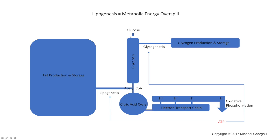In summary, glucose initially enters a cell and produces enough ATP to cover its cellular needs. Above and beyond this, that glucose enters into glycogenesis, storing excess energy as glycogen. Once those glycogen levels are full, the acetyl-CoA generated from glucose breakdown accumulates and is fed into an overspill mechanism called lipogenesis, which converts that acetyl-CoA into fat.